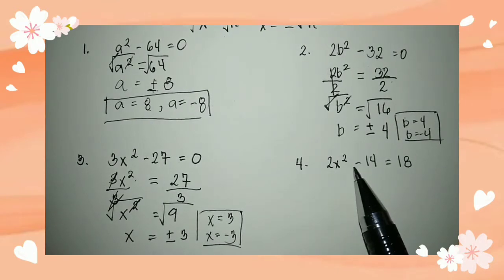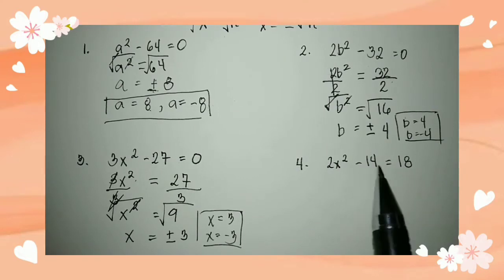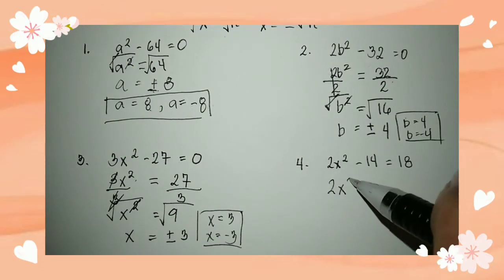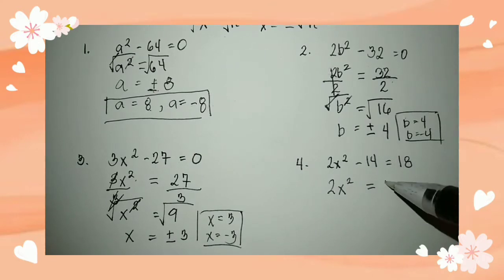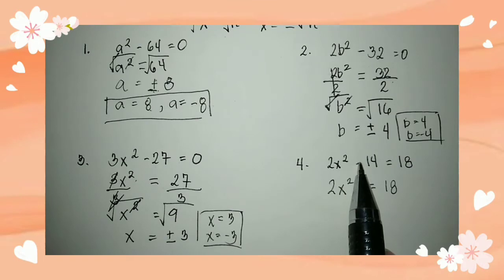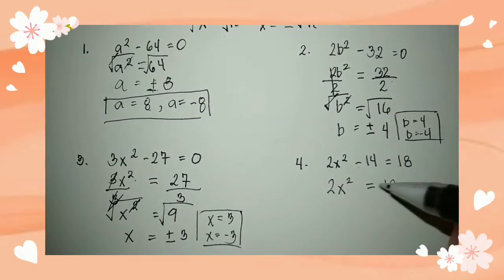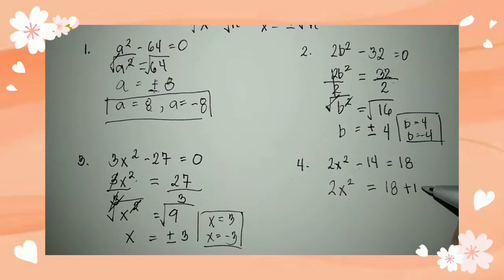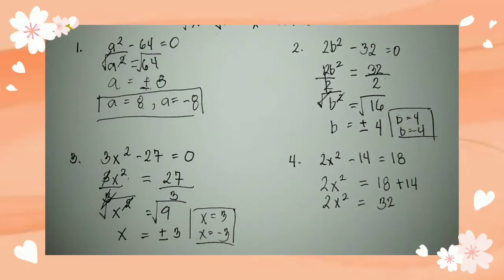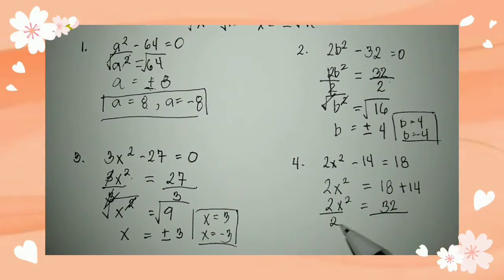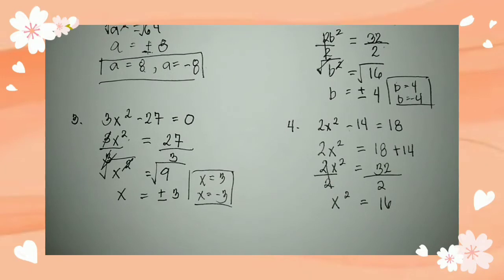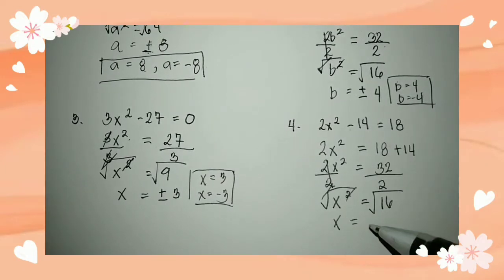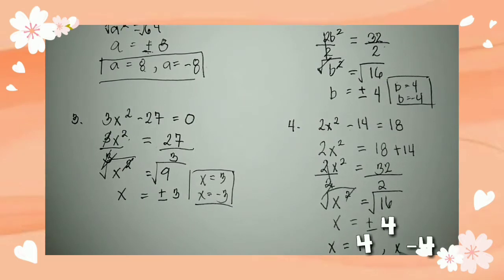Example number 4: we have 2x squared minus 14 is equal to 18. Transpose negative 14 to the other side — it becomes positive 14 — and add to 18: 18 plus 14 equals 32. So 2x squared equals 32. Divide both sides by 2: x squared equals 16. Extract the square root. x is equal to positive and negative 4. So the solutions are x is equal to positive 4 and x is equal to negative 4.